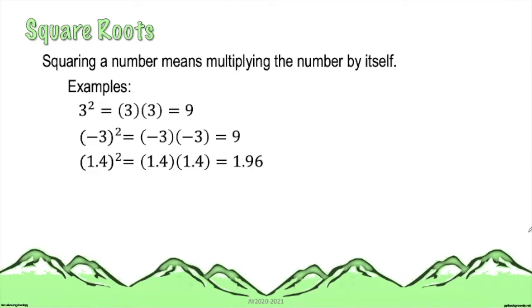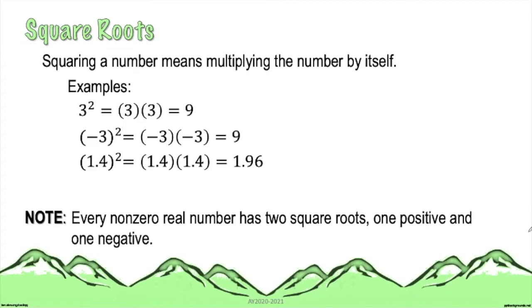A non-integer number can also be squared. If we have the square of 1.4, it means multiplying 1.4 by itself 2 times, which is equal to 1.96.